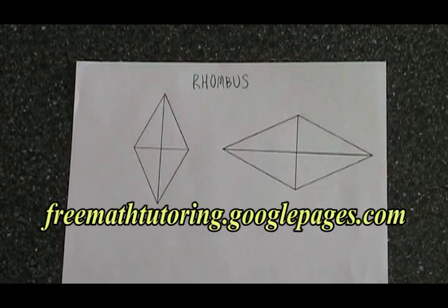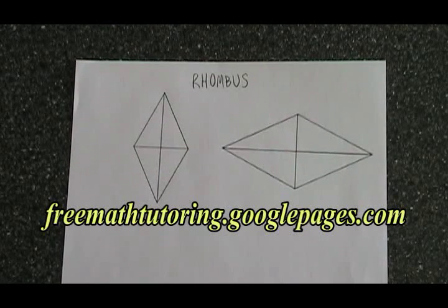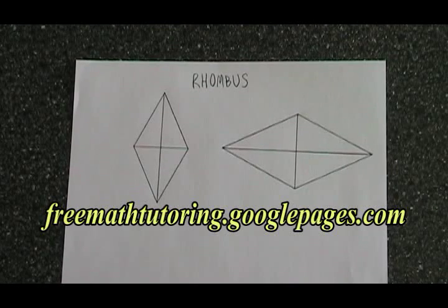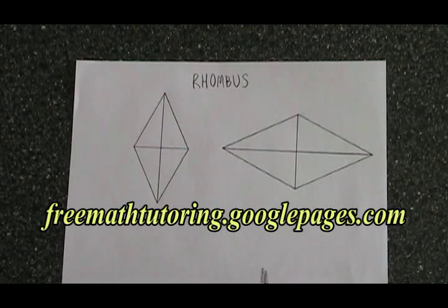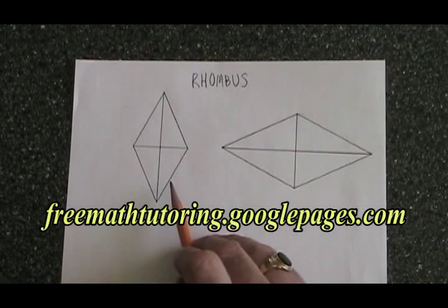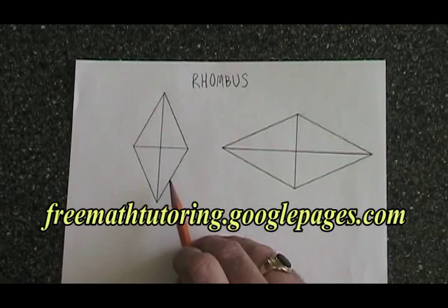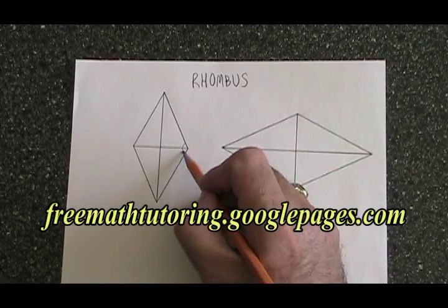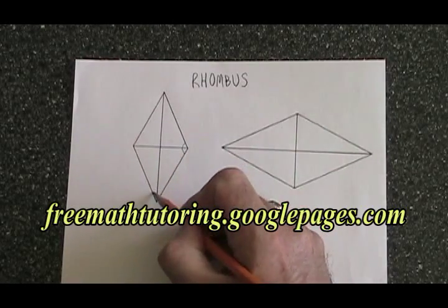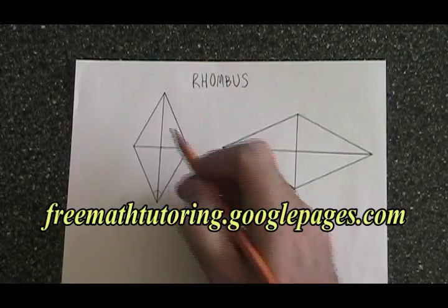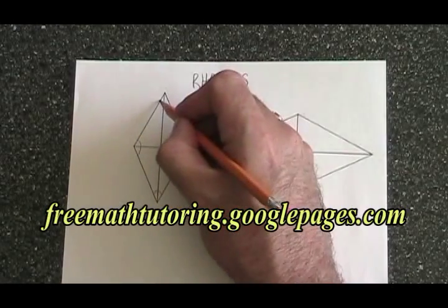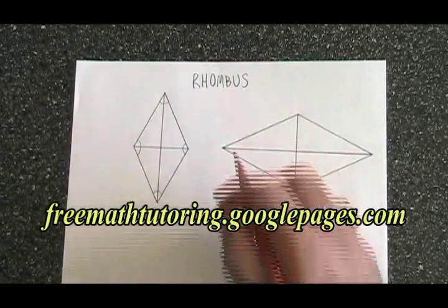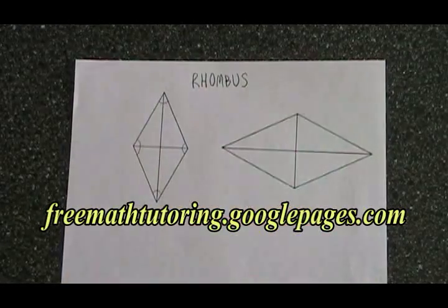The properties of a rhombus are similar to the properties of a square. A rhombus is a quadrilateral, and like all quadrilaterals, the four angles on the inside, if you add them up, have to add up to 360 degrees.